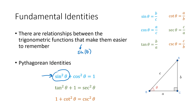But when we say sine squared of theta, what we really mean is sine of theta, and then we square that. And cosine squared, again, means cosine of theta, and then we square that. So it is a little bit unfortunate that we put the square on the trig function, but it's a really common notation. It's something that you're going to see a lot, so unfortunately it's something we're going to have to get used to.